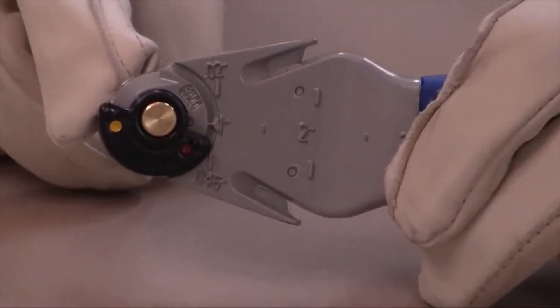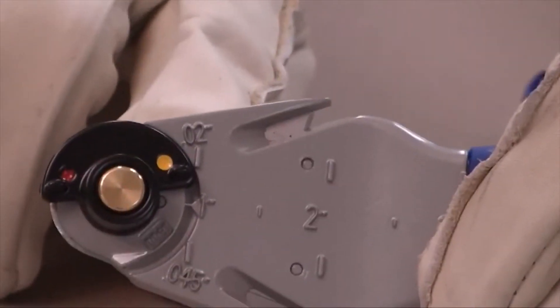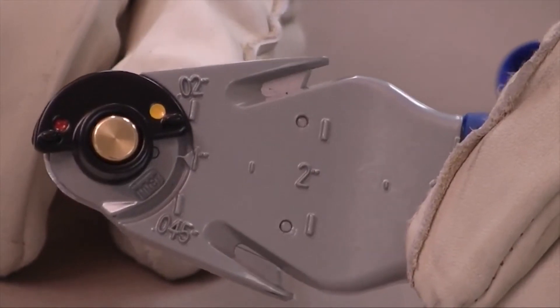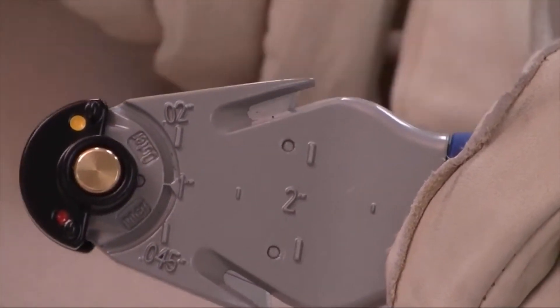The yellow dot indicates the blade for the outer jacket. The word outer is also written on the tool. The red dot indicates the blade for the inner jacket. The word inner is also written on the tool.